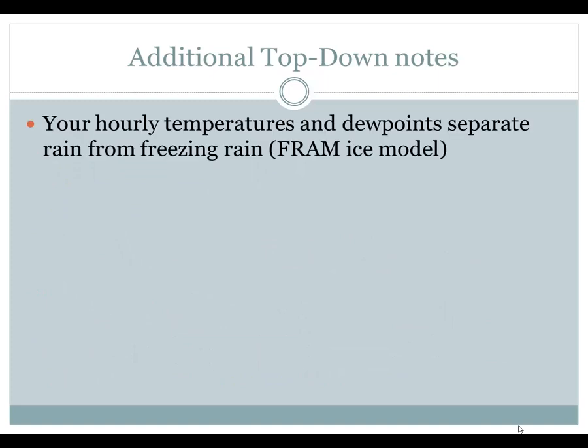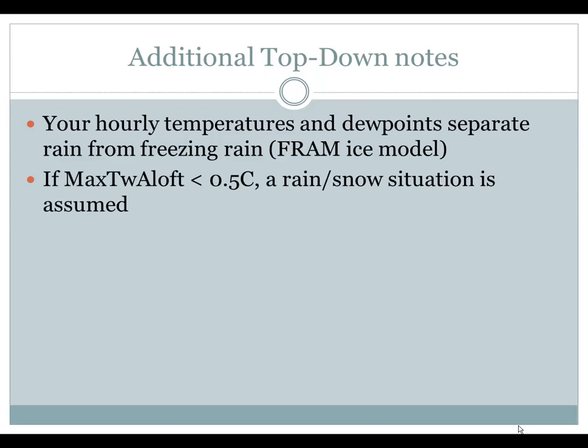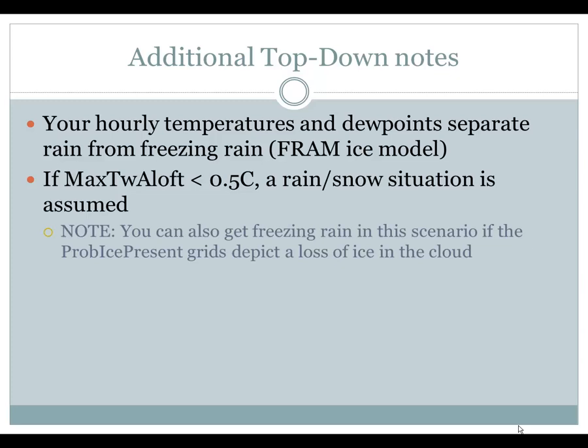A few additional top-down notes: hourly temperatures and dew points separate rain from freezing rain — these are foundation grids, with dew points involved via the FRAM ice model. If your max wet bulb aloft happens to be less than half a degree Celsius, the assumption is a rain-snow situation — defined from 2,000 feet above the ground. Below that half-degree threshold, you get into rain-snow situations. Note that you can also get freezing rain in this scenario, depending on whether Prob Ice Present grids depict a loss of ice in the cloud. A rain-snow situation can start going over to freezing rain — that has happened before.